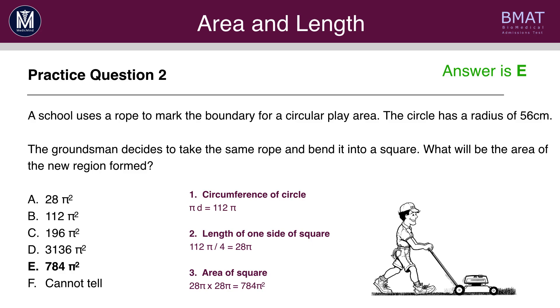Now, you times 28π by 28π. Because, if one length is 28π, then the area would be 28π all squared. And therefore, the answer you get is 784π².